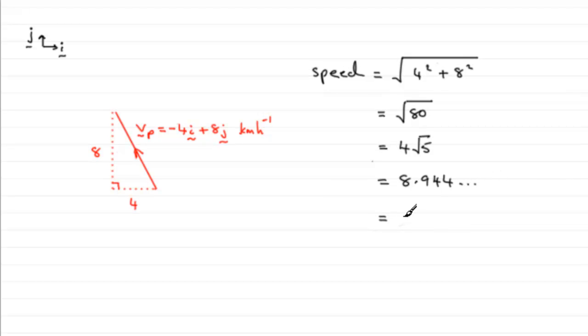So if you approximate it, say, to one decimal place, it will be 8.9 and the units would be kilometers per hour. Let's put that to, say, 1dp, one decimal place.